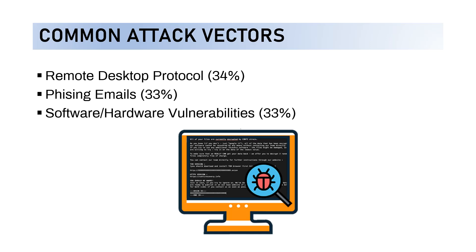Remote Desktop Protocol accounts for 34%, phishing emails 33%, and software or hardware vulnerabilities 33%. These are the common attack factors utilized by Conti.